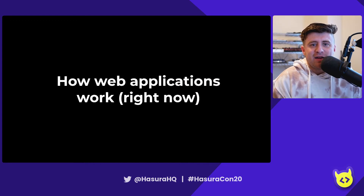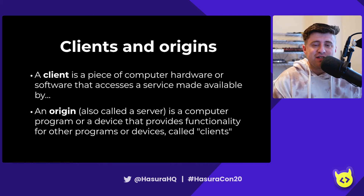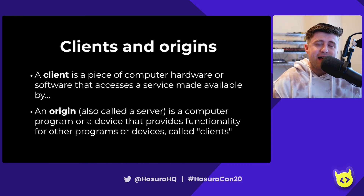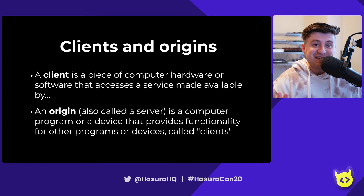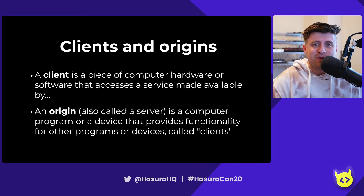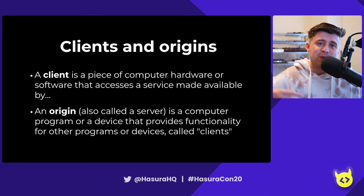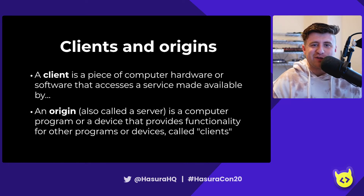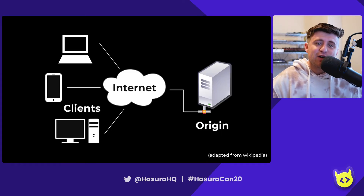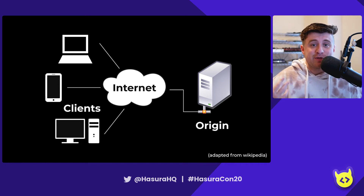Let's talk a little bit about how web applications work right now. Traditionally, applications use what's called a client and origin model. As a user of a website, I'm usually referred to as a client — my iPhone, my TV, my fridge — basically anything with a connection going out to different services and APIs is a client. My origin is where those requests go to, usually a big data center somewhere like North Virginia, and we get responses back.